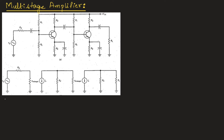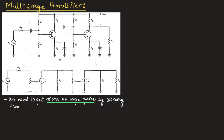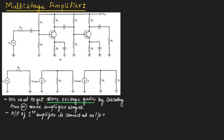Multi-stage amplifiers are used to get more voltage gain by cascading two or more amplifier stages. The output of the first amplifier stage is connected as input to the second amplifier stage, and the output of the second amplifier is connected as input to the third amplifier stage, and so on.